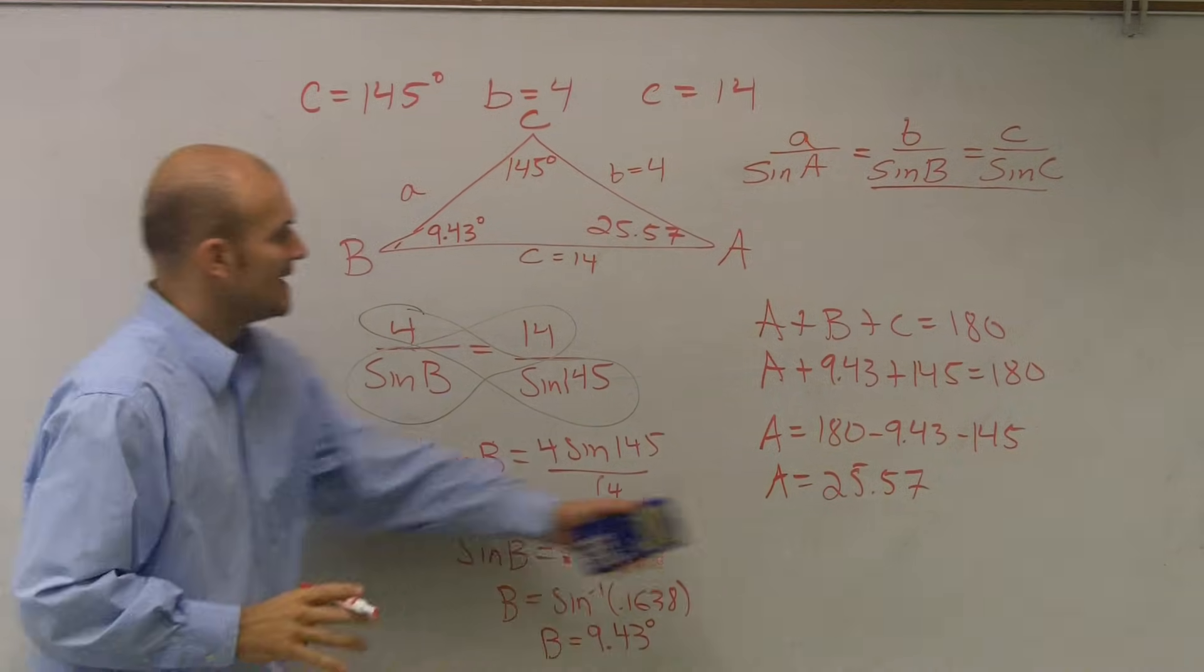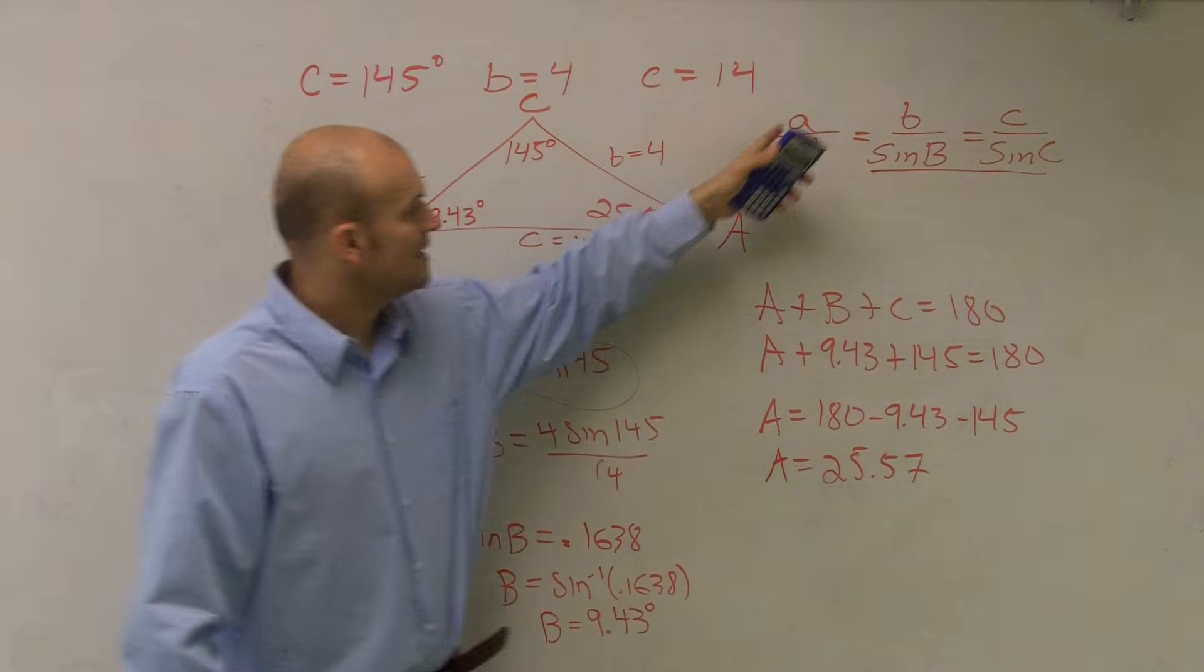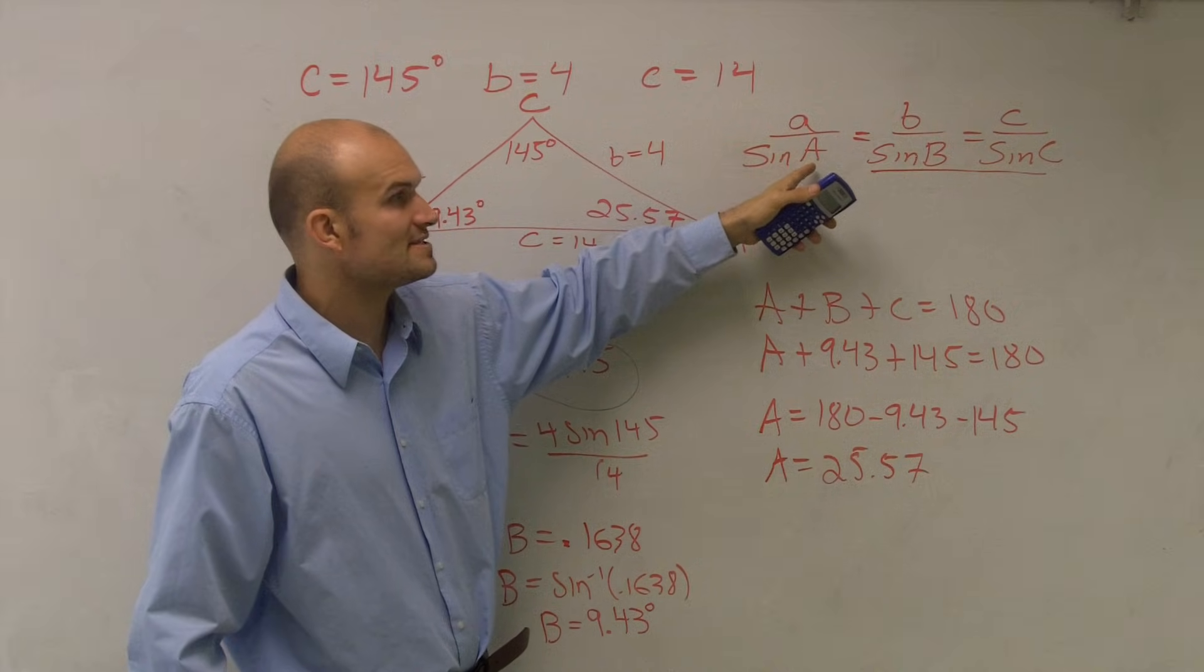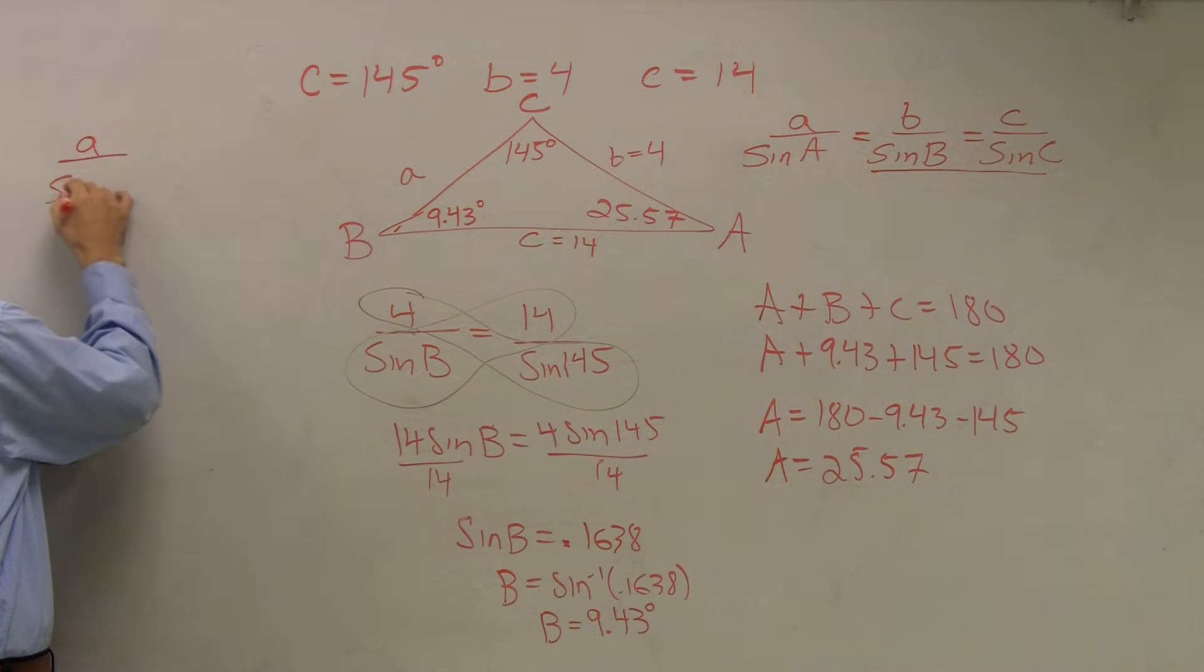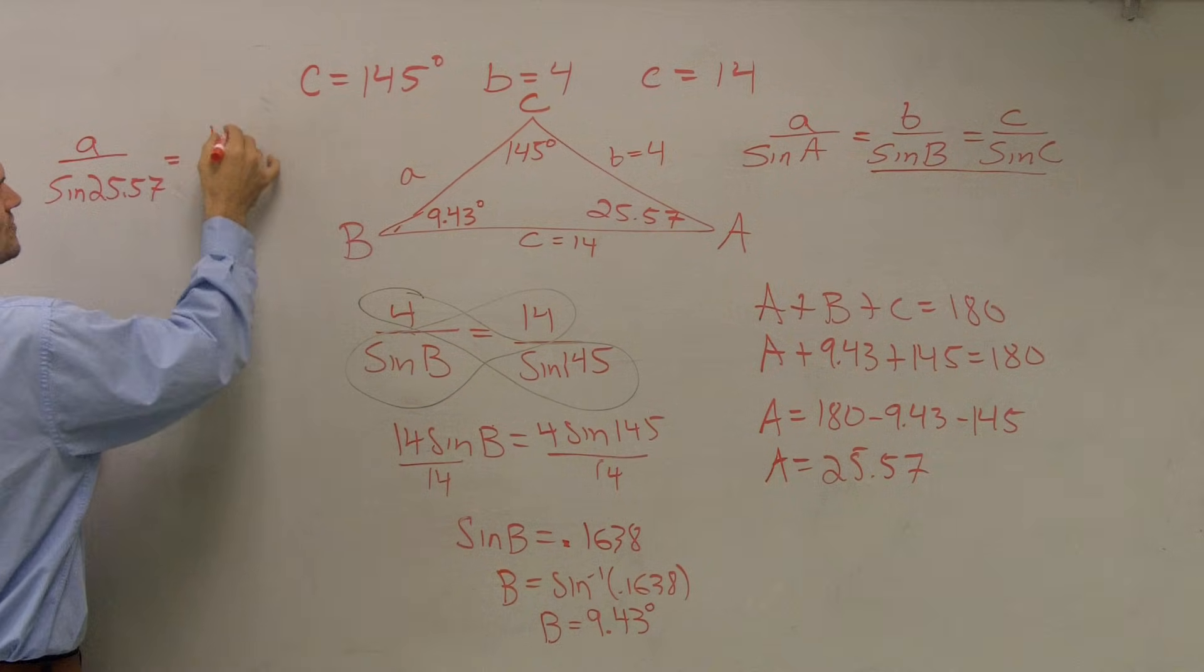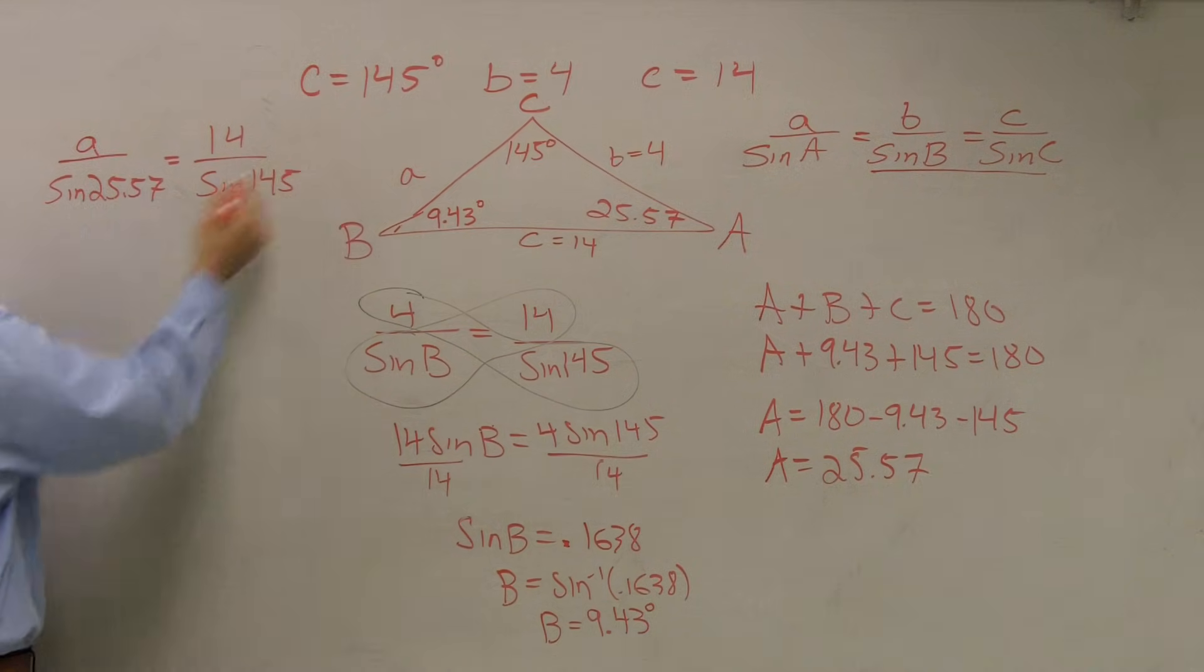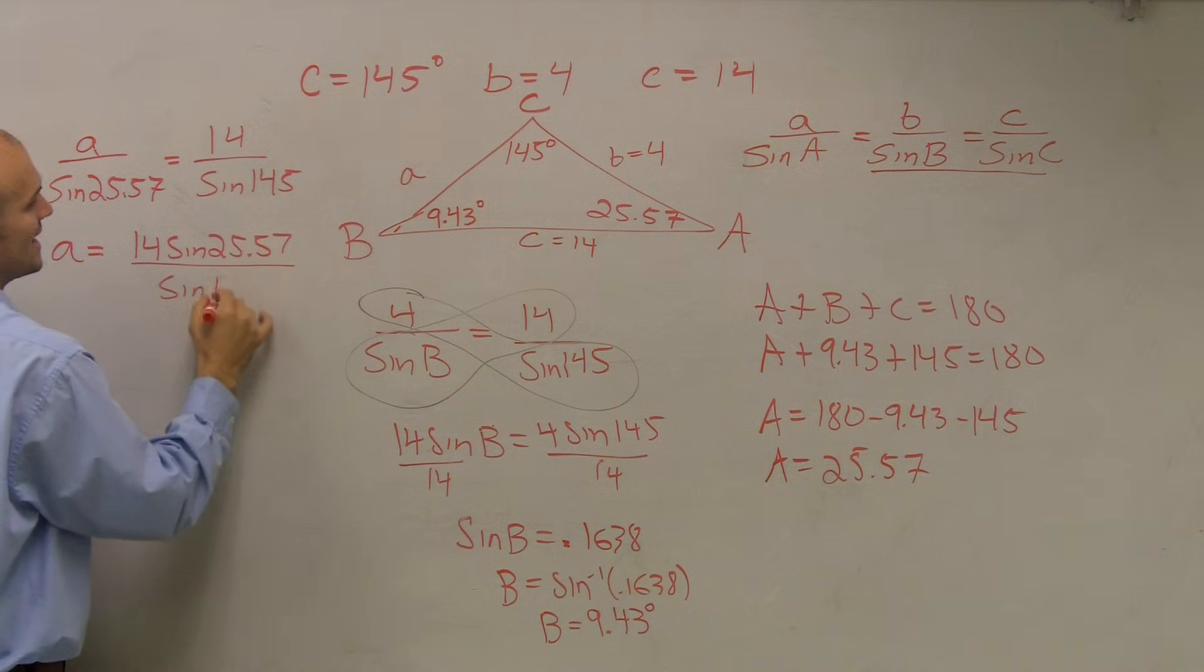I hope I have some room over here. So now that I know what A is, I can now go back and use my same proportions for Law of Sines and say I don't know the side length of A over sine of 25.57 is equal to, again I'll use this ratio, so I'll say A over sine of 25.57 is equal to 14 over sine of 145. Now, when I cross multiply here, I'm going to get A equals 14 times sine of 25.57 divided by sine of 145.